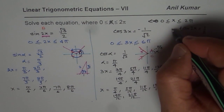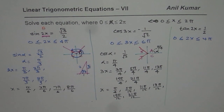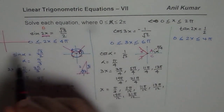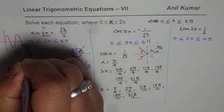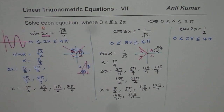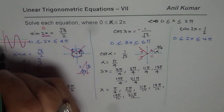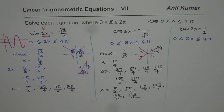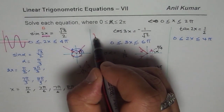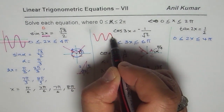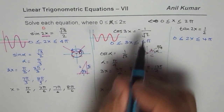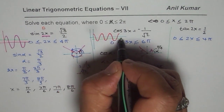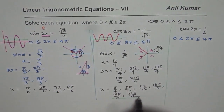The reason the number of answers changes is that sin(2x) produces 2 sine waves within 0 to 2π (horizontally compressed), giving 4 solutions for a positive value. Similarly, cos(3x) gives 3 waves, and for a negative value like -1/√2 you get 6 solutions — two intersections per wave.